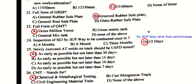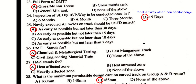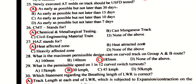Newly executed or built-on track should be USFD tested as early as possible but not later than 30 days. CMT stands for Chemical and Metallurgical Test.